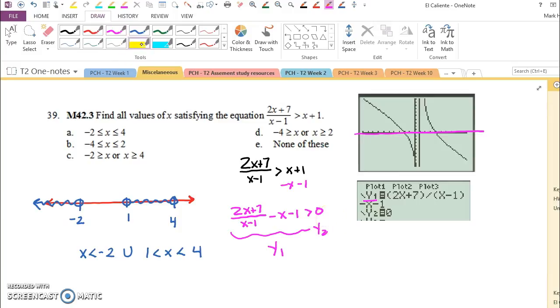And when is it above? Well, it's above everything left of 2. You can see that on your graph. That's negative 2.